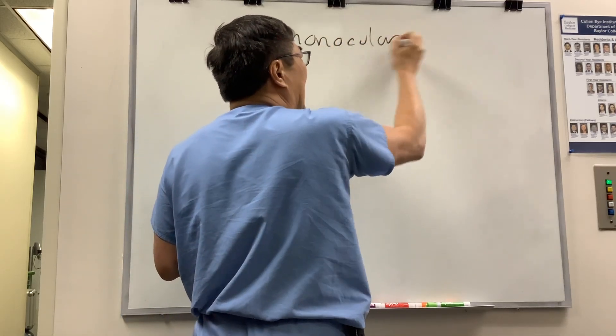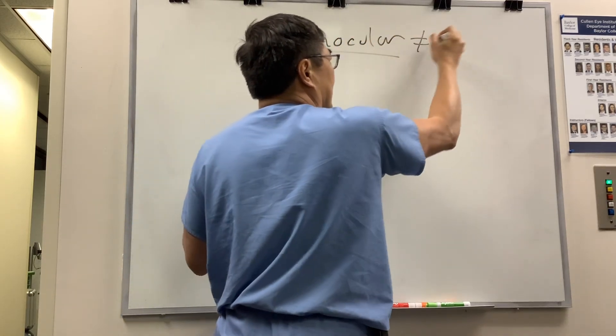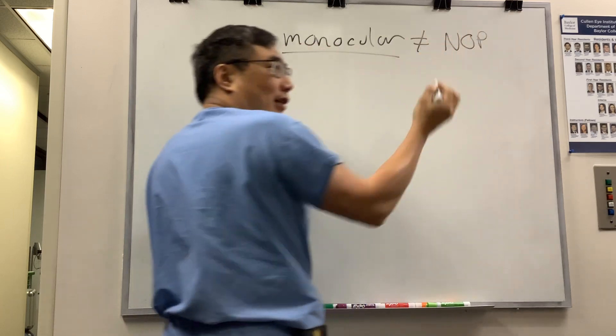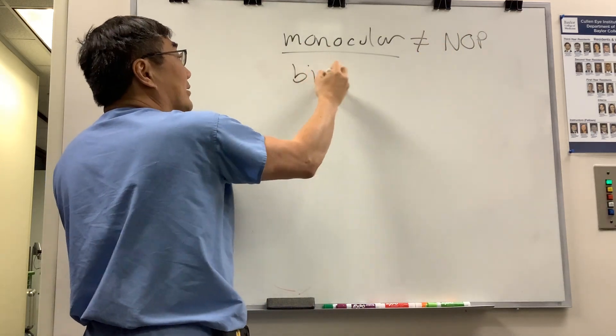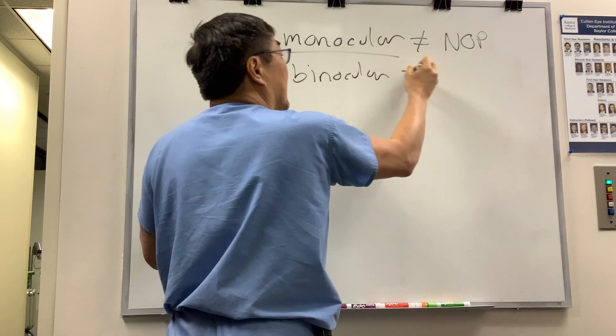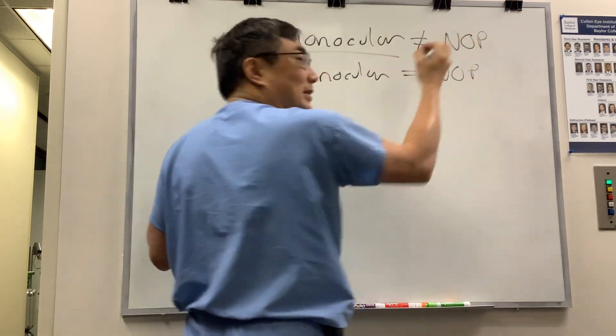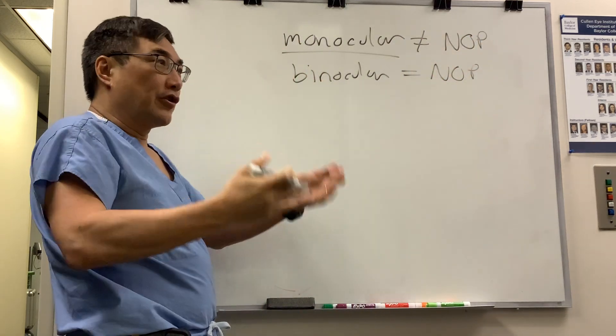The traditional teaching is that monocular diplopia is not neuro-op, it's in your eye, and that binocular diplopia is neuro-op because it's misalignment of your eyes, either from nerve, muscle, or junction.